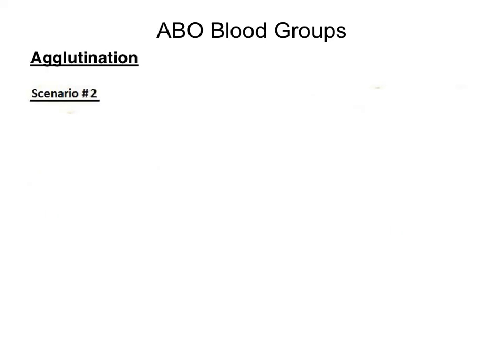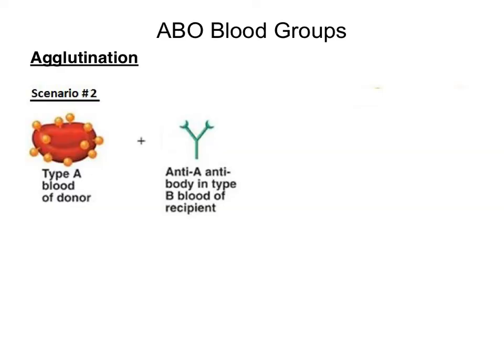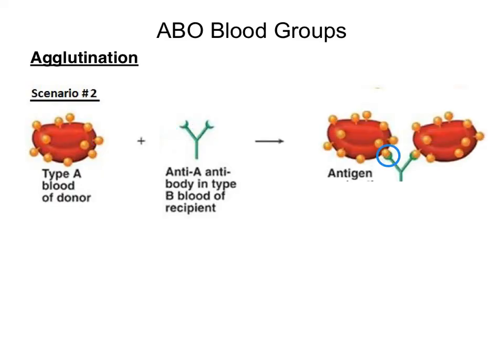In scenario number two, we have a donor with type A blood who is going to donate their blood to a person with type B blood. The plasma of the person with type B blood will have anti-A antibodies present. Notice the shape of the receptors of the anti-A antibodies and the shape of the antigen on the red blood cell. Because the shape of the receptor on the anti-A antibody matches the shape of the A antigen, the anti-A antibody can bind to the A antigen, causing agglutination or the clumping of red blood cells.